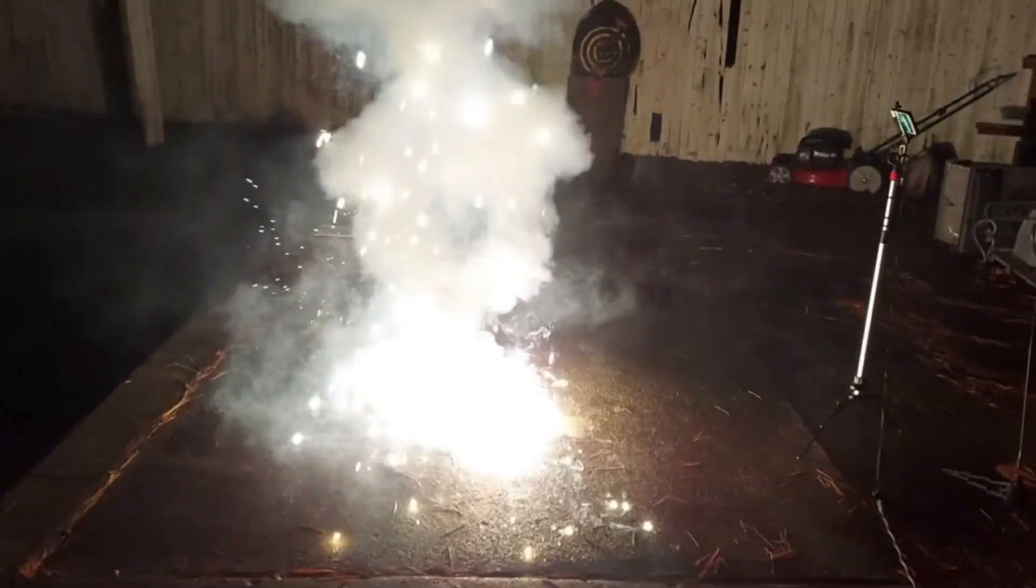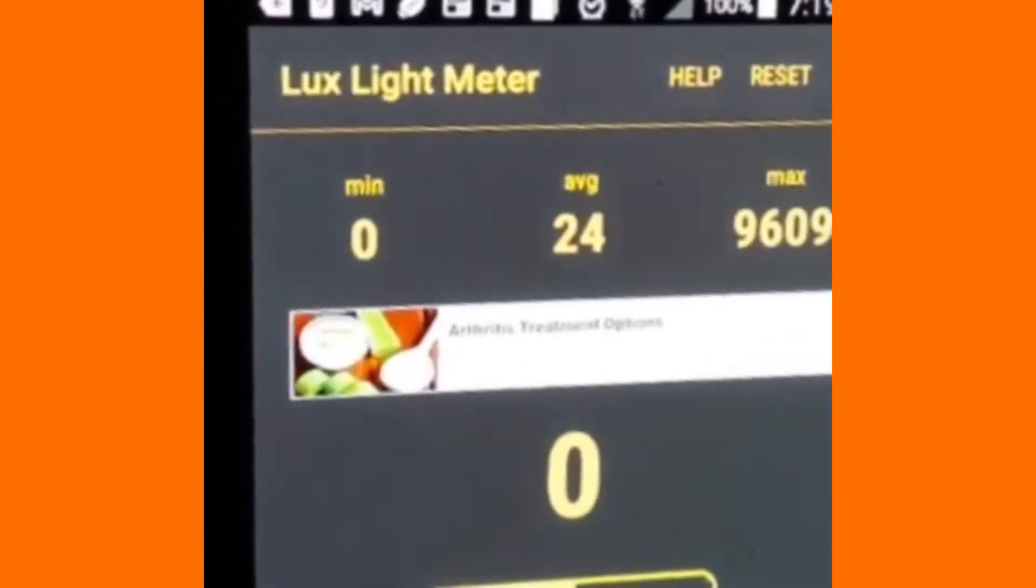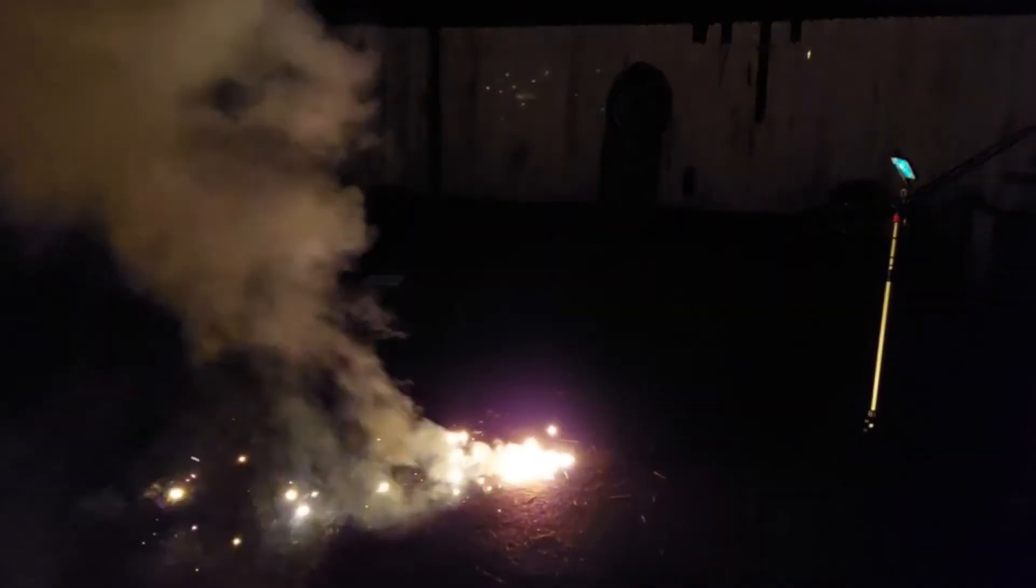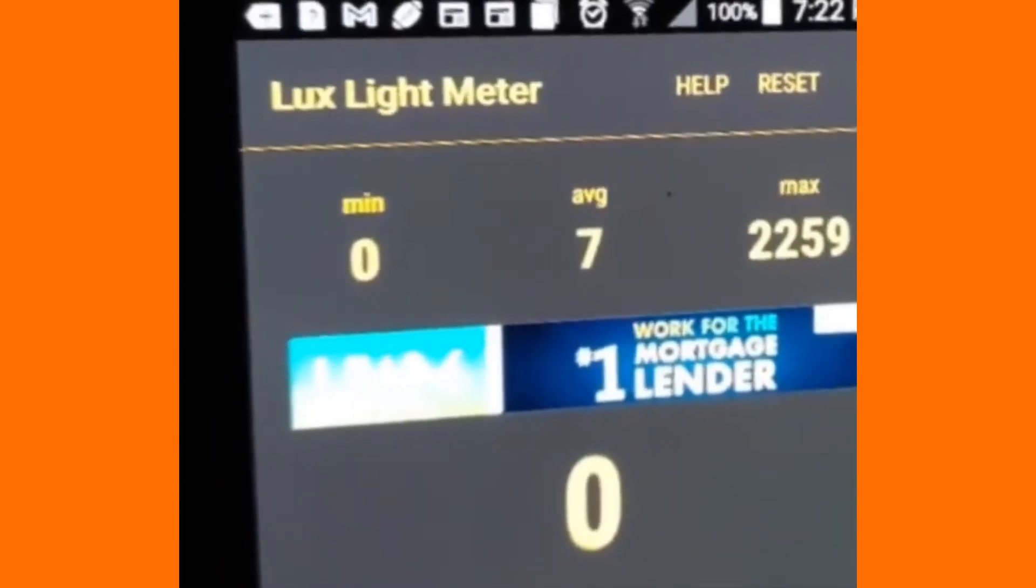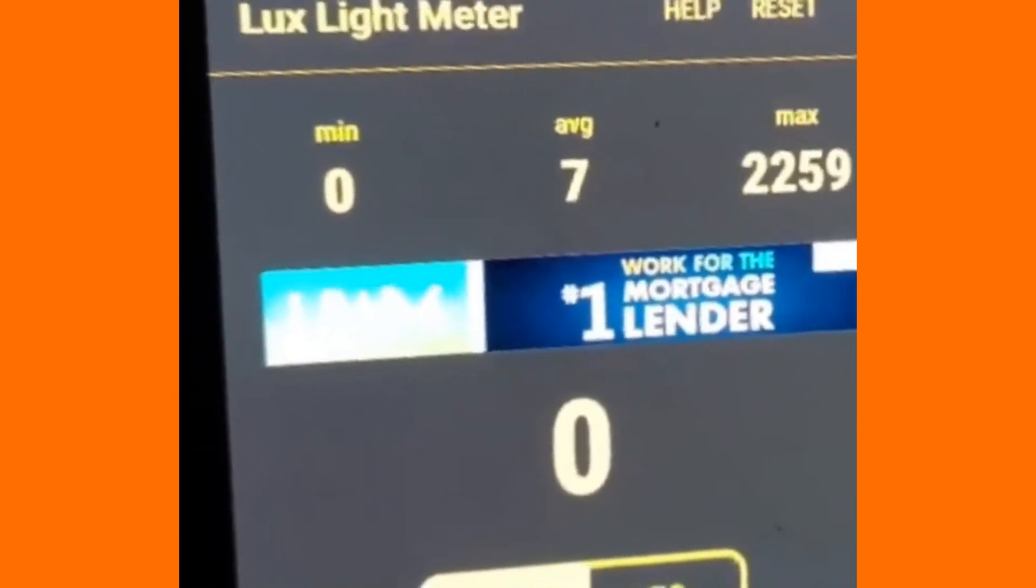This next mix is ammonium perchlorate and aluminum. That gave a reading of 9609. Our next mix is potassium chlorate aluminum, and I did add sulfur. Our potassium chlorate aluminum and sulfur gave us a reading of 2259 lux.